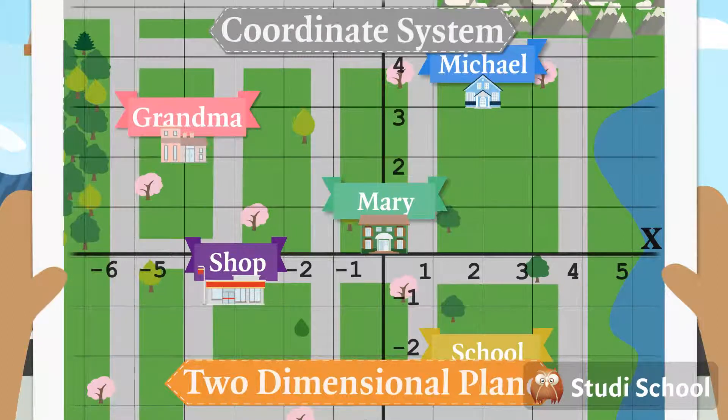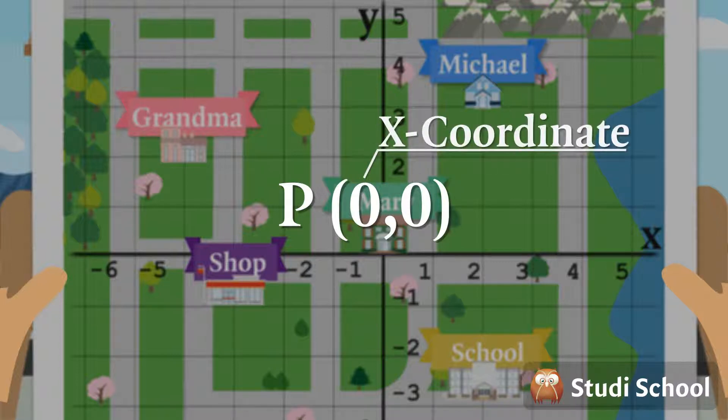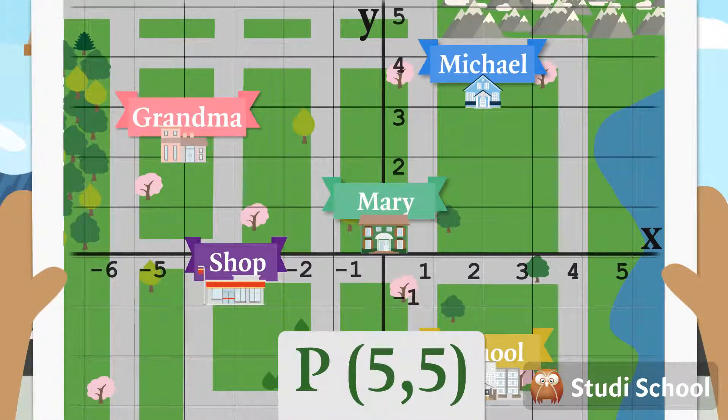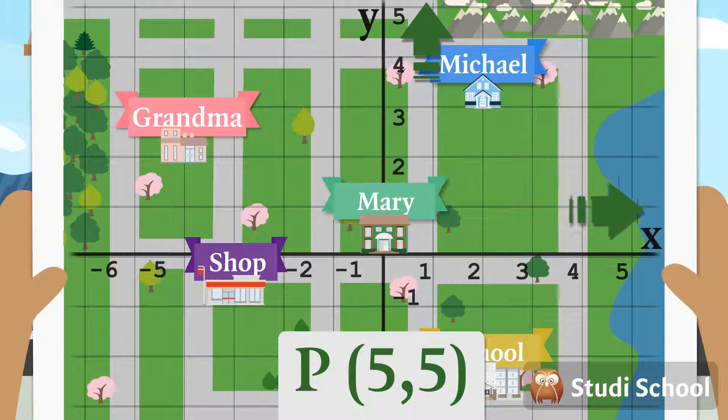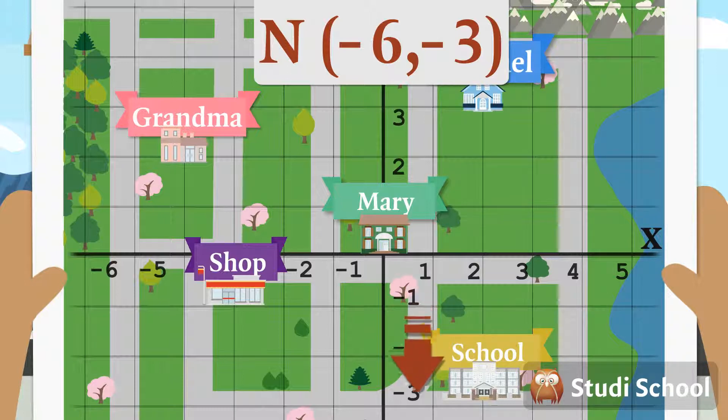Any point will be written as a letter with two numbers in brackets. The first number being the X-coordinate and the second being the Y-coordinate. A positive number means you go up on the Y-axis or right along the X-axis. A negative number means you go down the Y-axis or left along the X-axis.